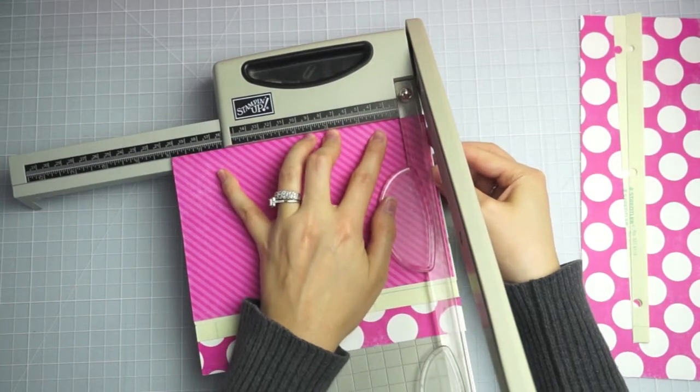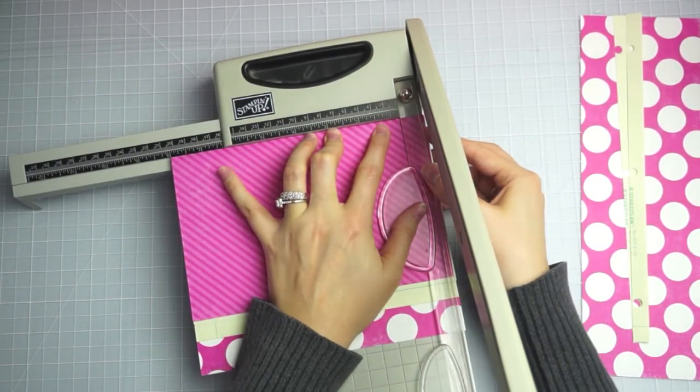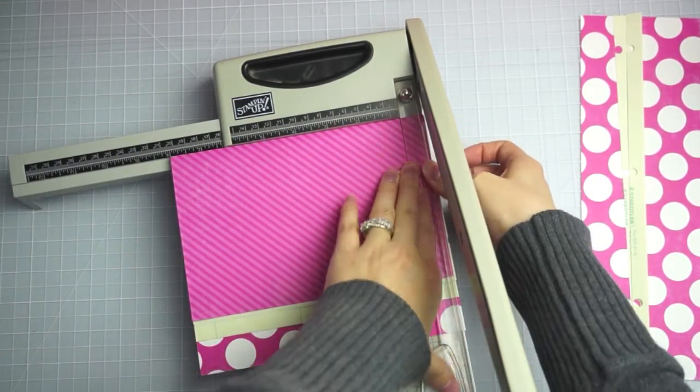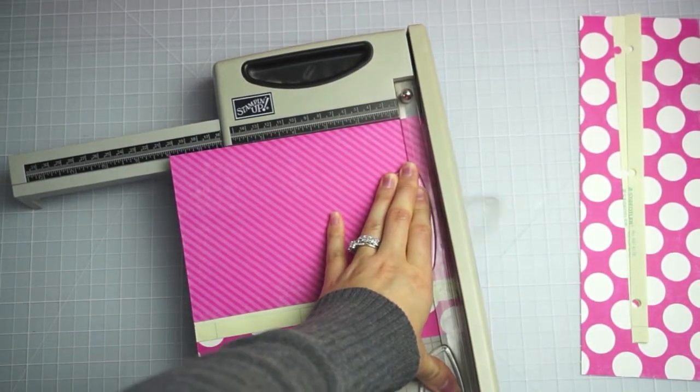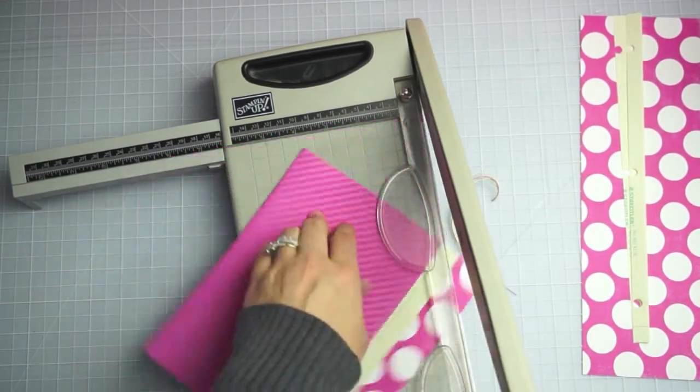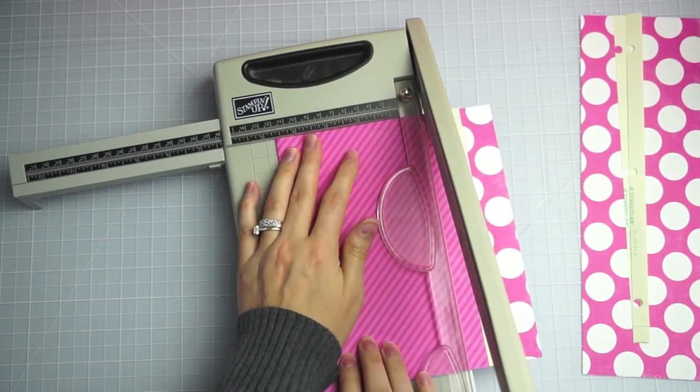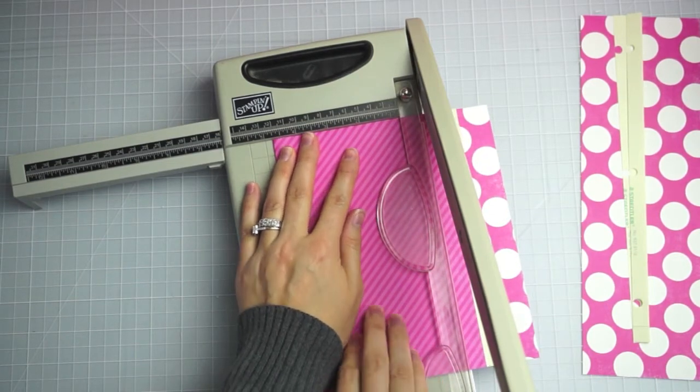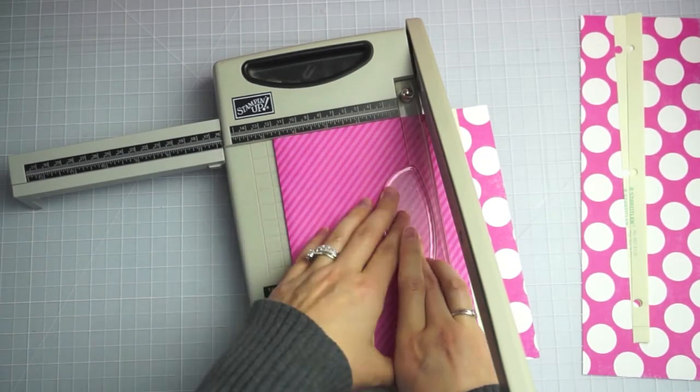They weren't exactly right. So I'm going to trim this edge first. And then I'm going to line my book up at 4.75 and then trim off all the edges.